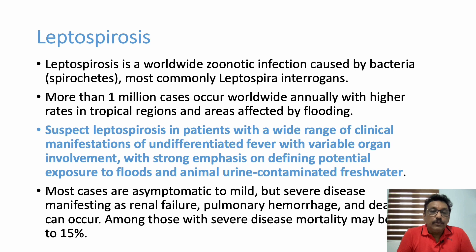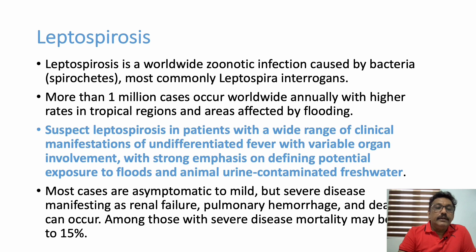After the initial fever there is a period with no fever at all, but after that the patient develops jaundice, renal failure, and pulmonary problems in the second phase of the disease. One important complication of leptospirosis is pulmonary hemorrhage, which we will discuss later. Many patients can have renal involvement; mild to moderate renal failures are very common in leptospirosis.